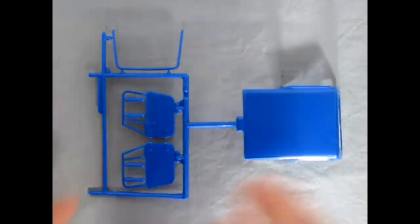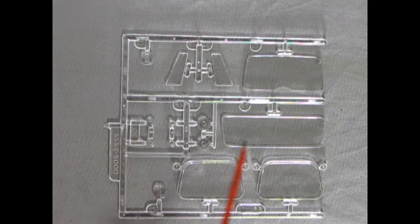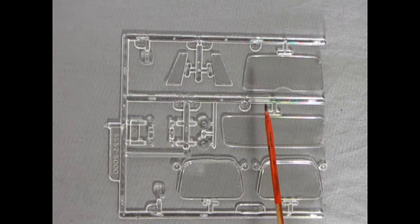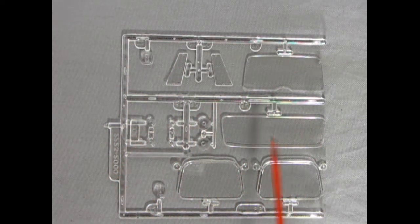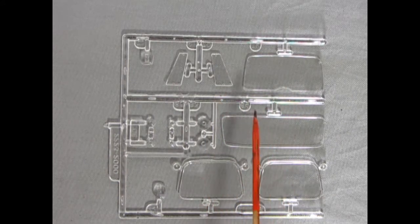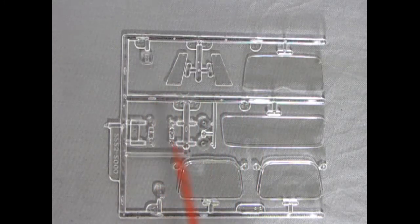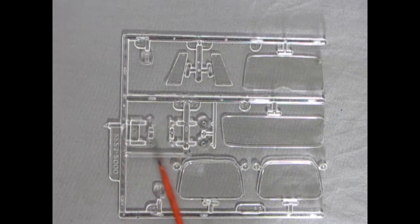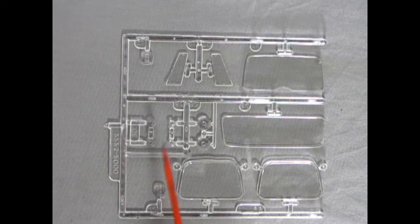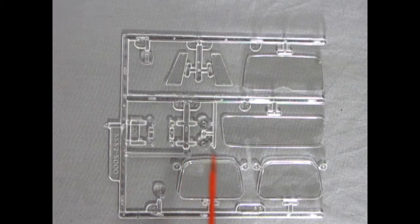Here we have the parts tree that makes up all our clear components. And unfortunately, Monogram never put this in a separate bag. So there are spots where there's a little light scraping. Which I'll have to polish out. Interestingly enough, there are no red components. Or clear red components in this kit. So you're going to have to paint these rear tail lamps. With something like Tamiya transparent red. Or Testers stoplight red enamel.